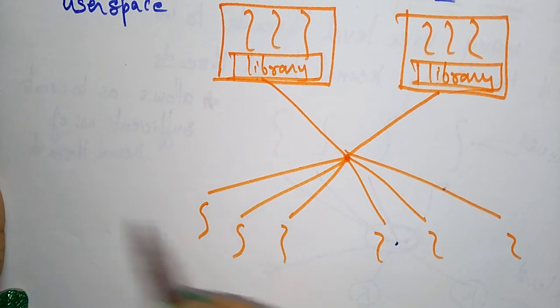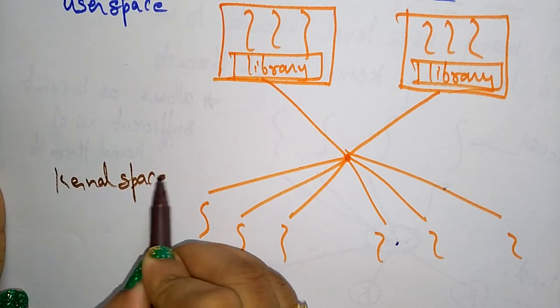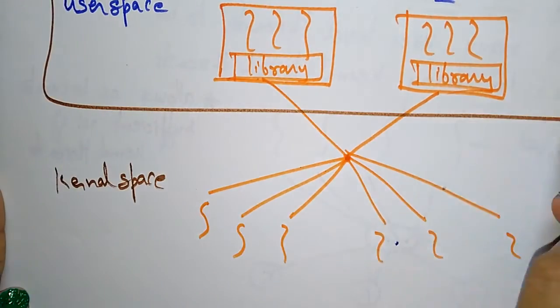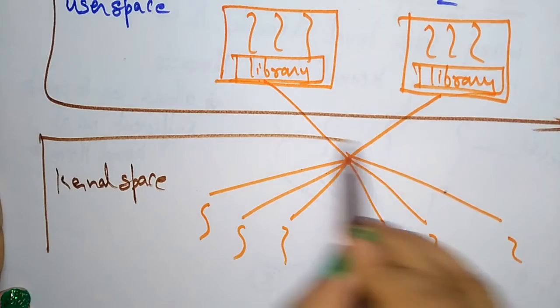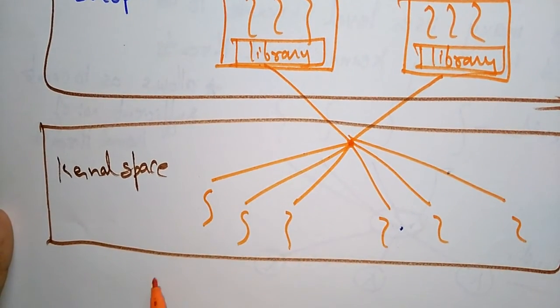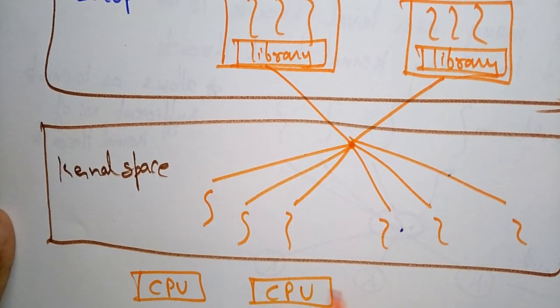And this you call it as a kernel space. Each thread is executing in multiple processors - multiple CPU processors.